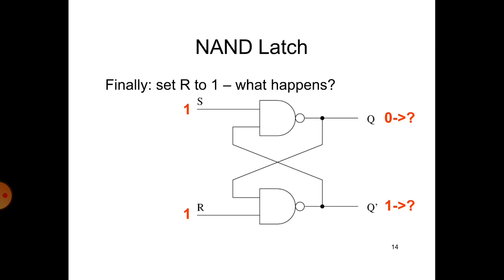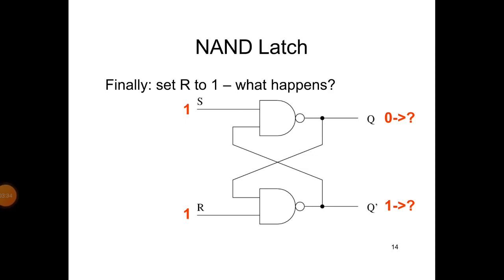Finally, set R to 1 — what happens? S will be 1, we are using a 2 NAND latch. R is 1 and Q will be 0, because the input of the second NAND gate is 0 and 1. That 0 and 1 is given to the second NAND gate, so that will be Q̄. Q̄ is given to the input of the first NAND gate, so that will be 0. So with S=1, R=1, the outputs are Q and Q̄, transitioning: 0 goes to 1, and 1 goes to 0.